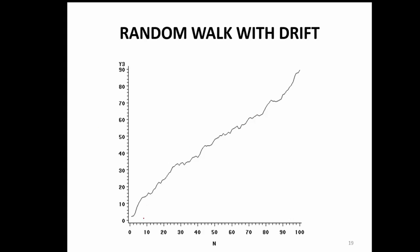It does not start from 0 — it starts somewhere with a drift. That is the theta naught. And then there is no trend at all. It has some deterministic part and some stochastic part. So, this is a typical case of random walk with a drift.